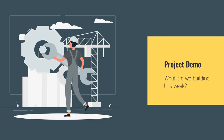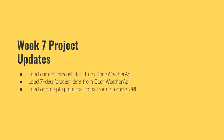For our week seven project demo, we're going to be focusing on three main things. We're going to look at how to load current forecast data from the Open Weather Map API so we can actually see what the weather is at our entered location. Then we're going to load the seven day forecast data from Open Weather Map API from that same entered zip code location. And finally, we're going to load and display forecast icons from a remote URL so that our list items show icons relating to what the current weather looks like.